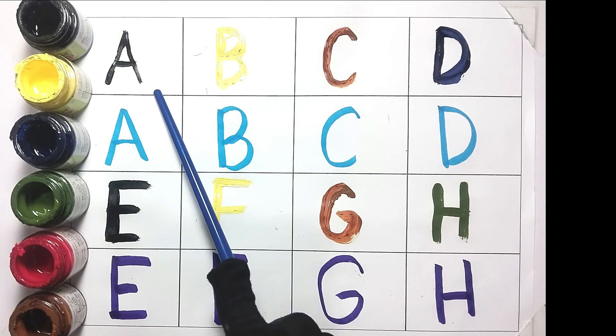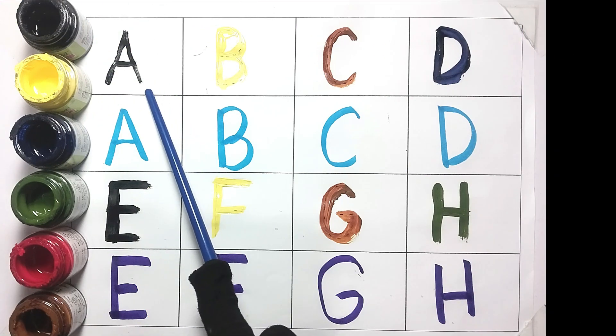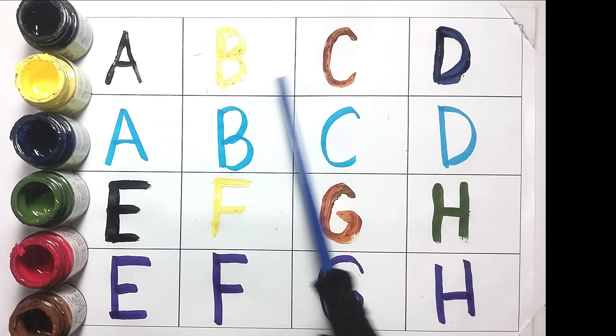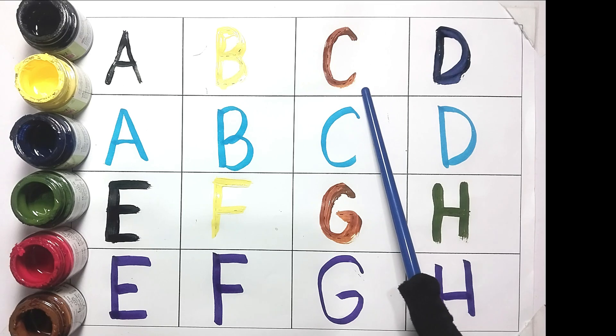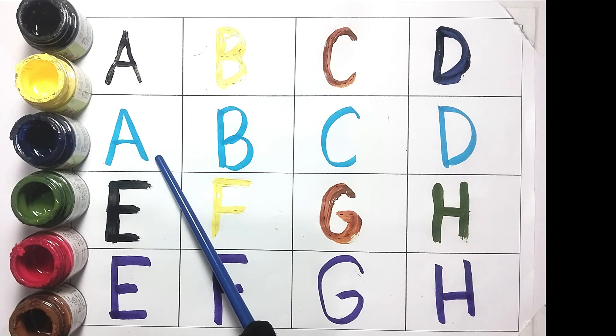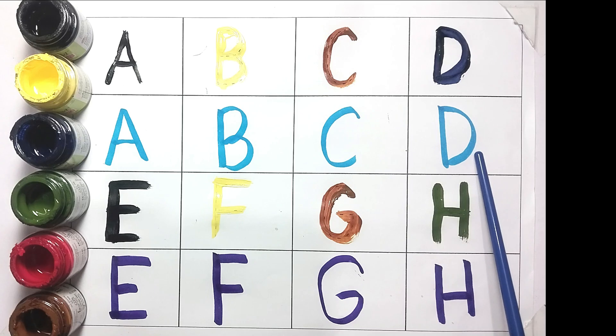A, A for Ant. B, B for Bird. C, C for Cat. D, D for Dog. A, B, C, D.